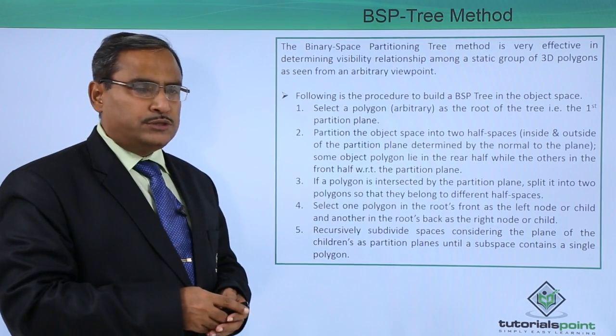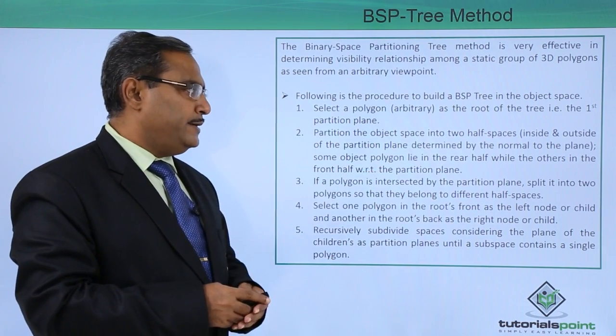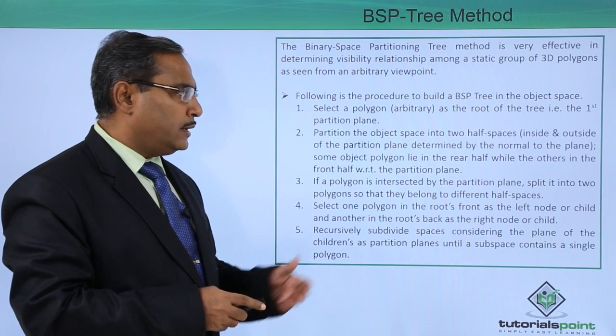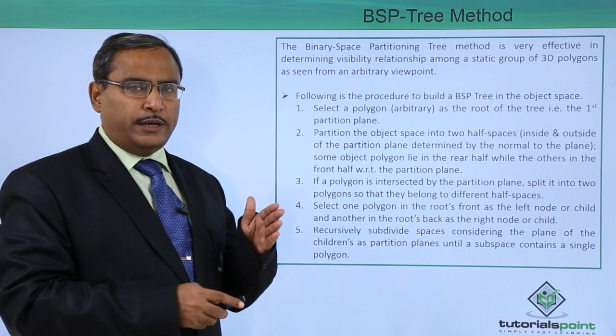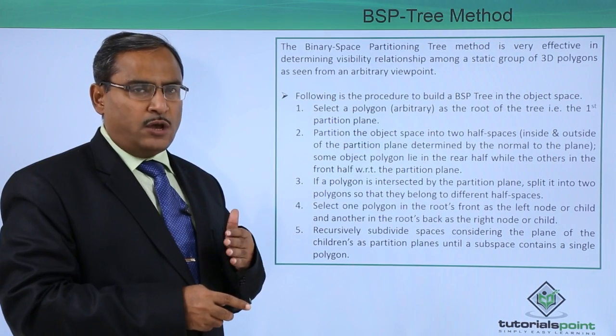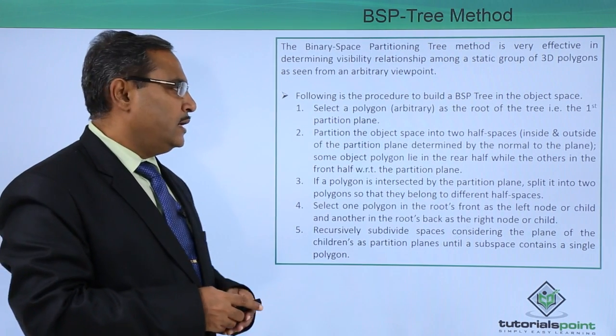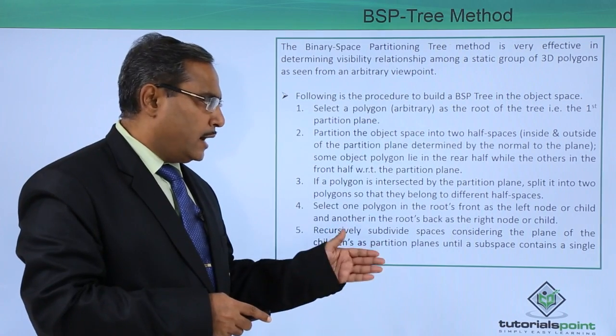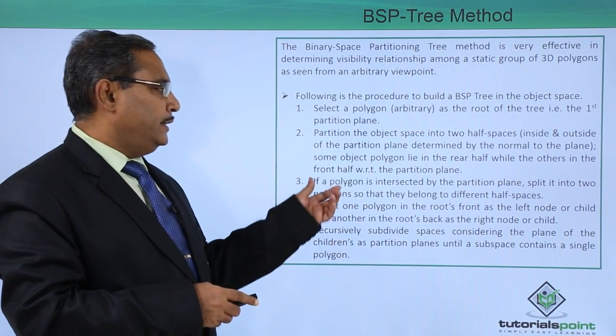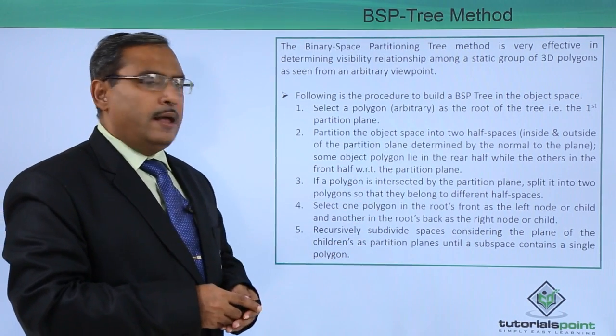One is the inside, another is the outside of the partition plane, determined by the normal to the plane. We shall draw one normal to the plane, and in this way we shall have two spaces. Some object polygons lie in the rear half while others lie in the front half with respect to the partition plane.